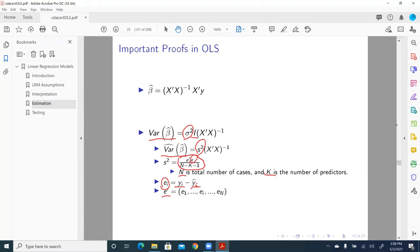So e1 is the error of prediction for the response variable y for the first observation. And e2 is the error, prediction error for the response variable, the second observation, so on and so forth.